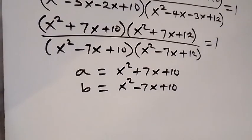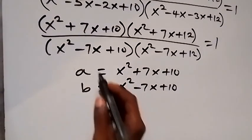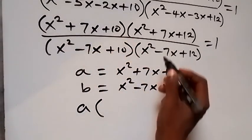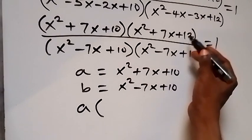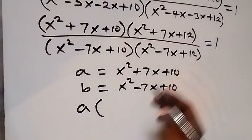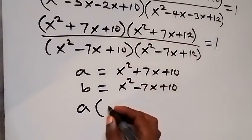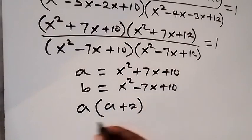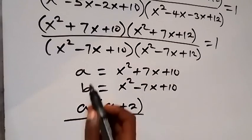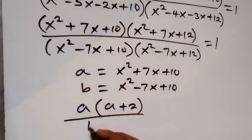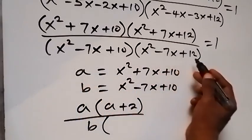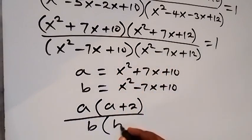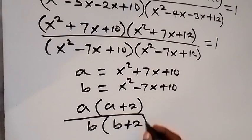We rewrite the left-hand side in terms of a and b. The numerator becomes a(a+2), since x²+7x+12 is just a+2. The denominator becomes b(b+2), since x²−7x+12 is b+2. This equals 1.